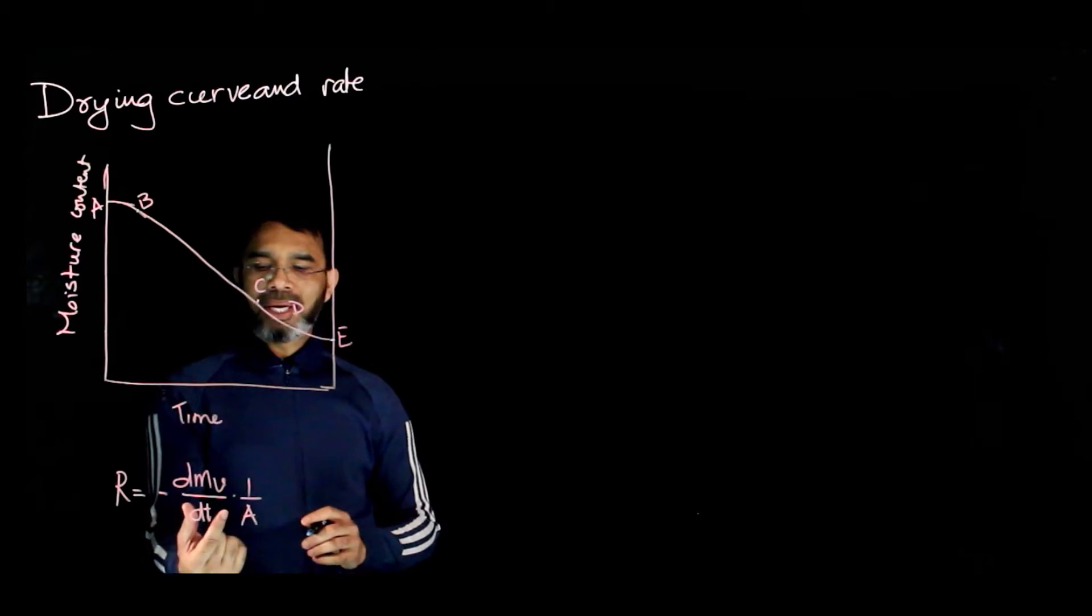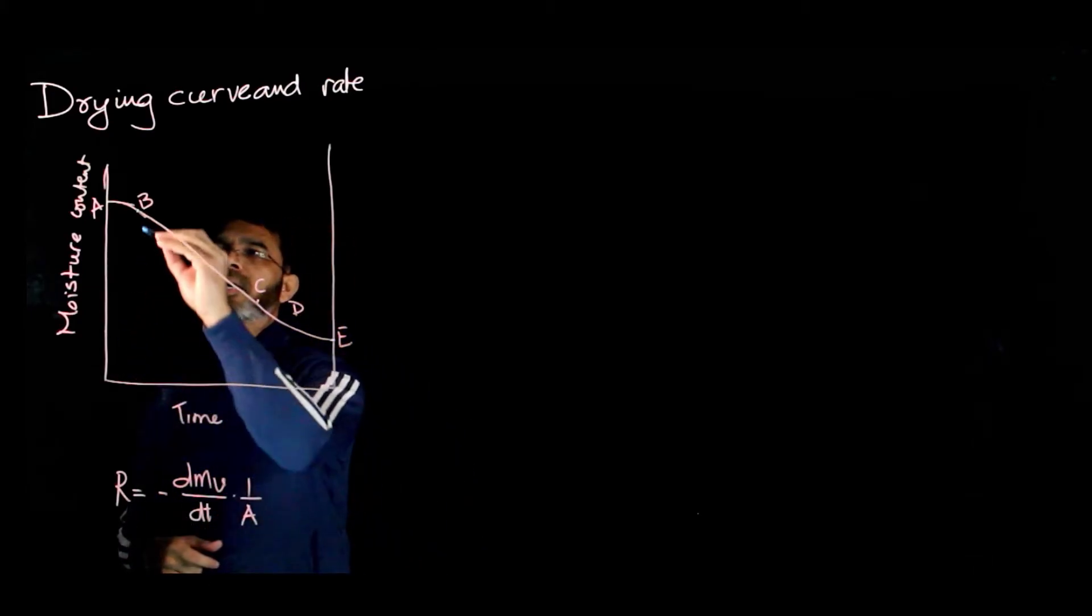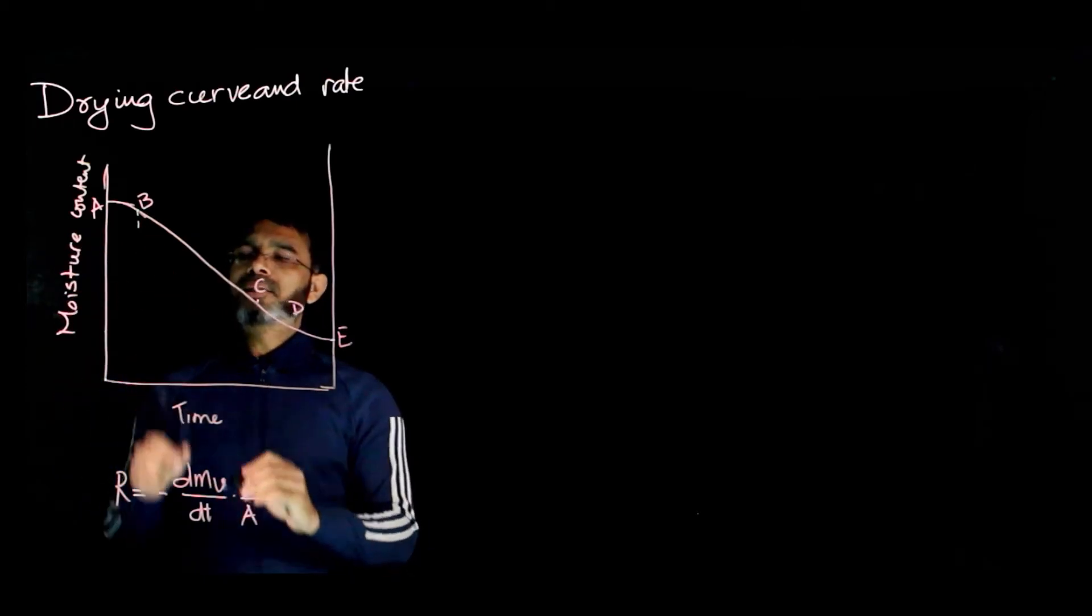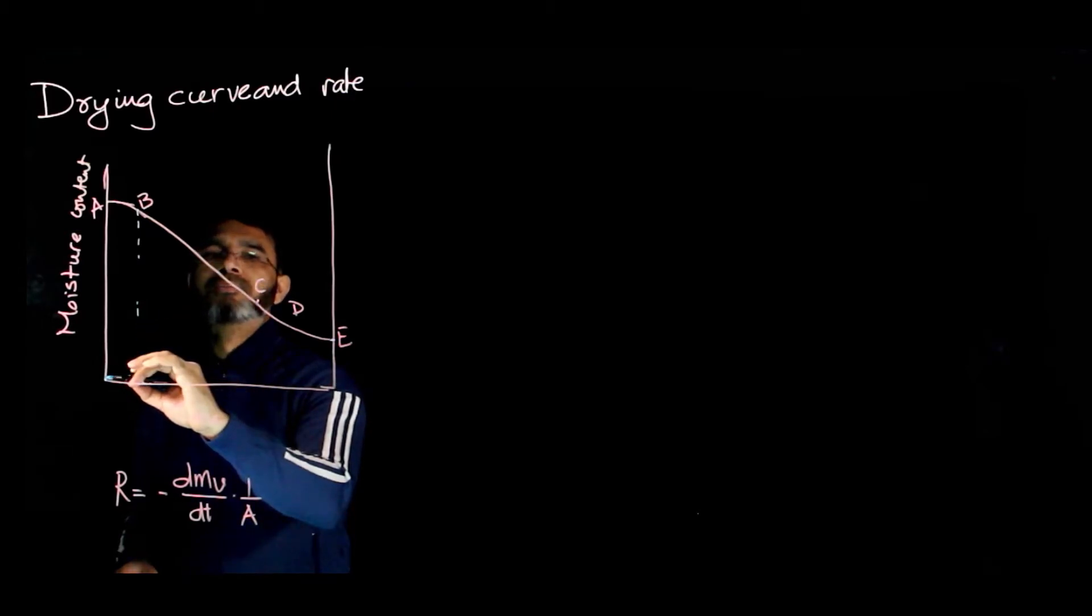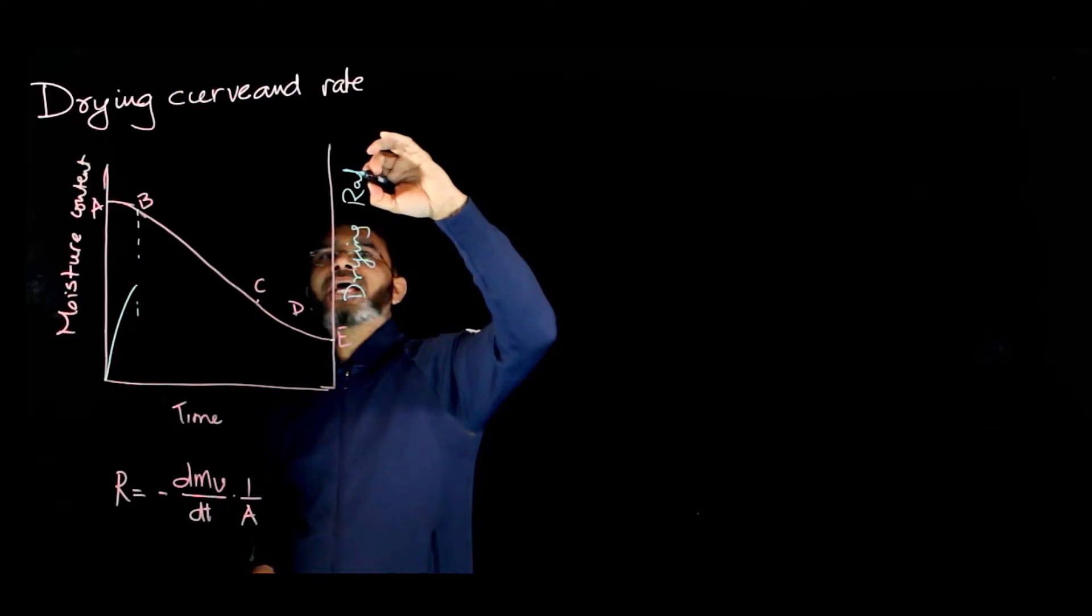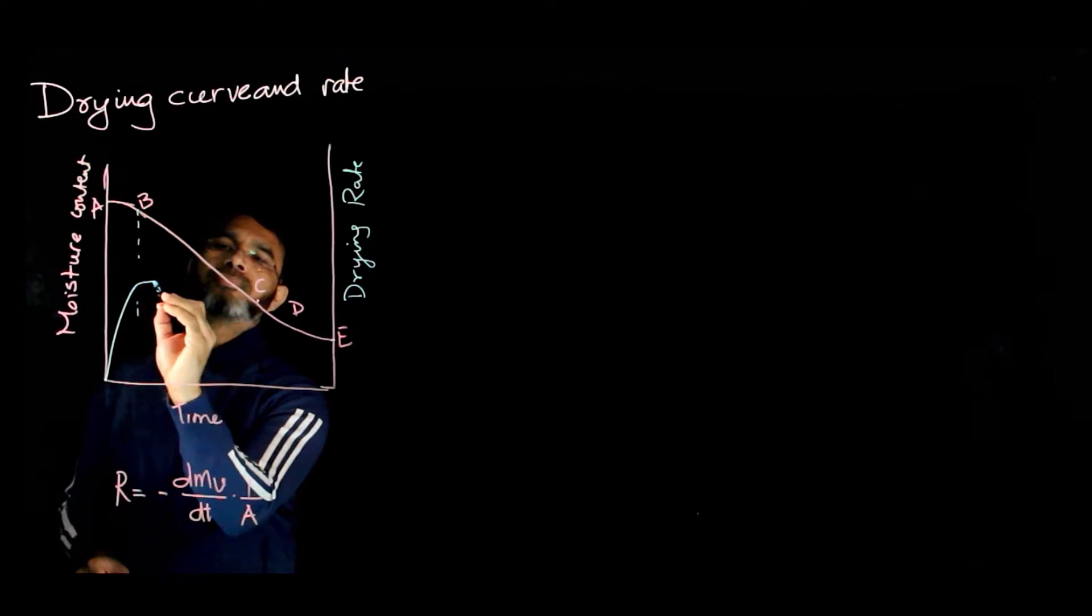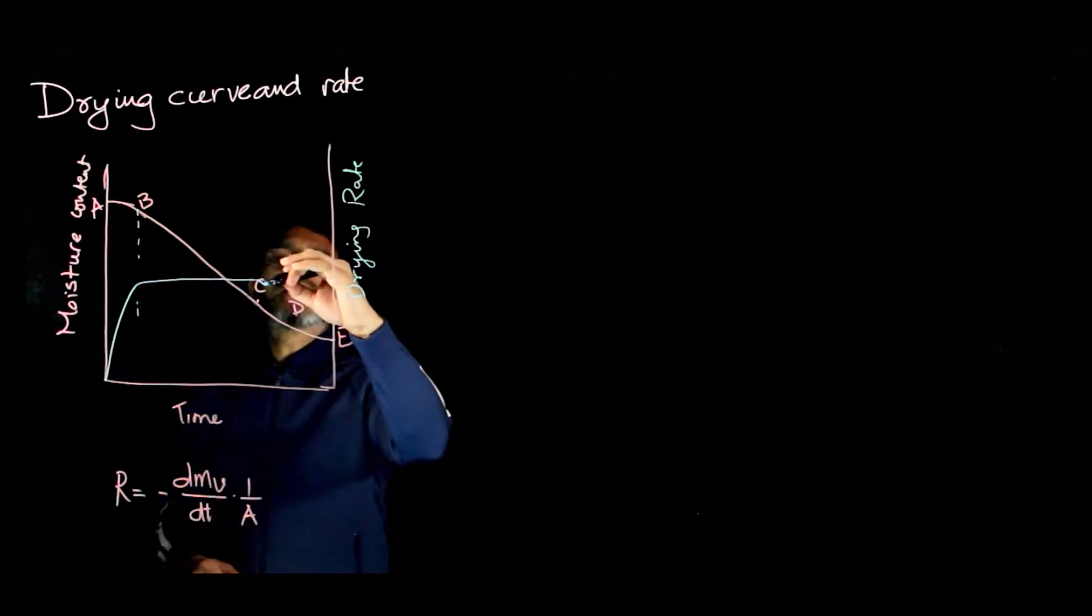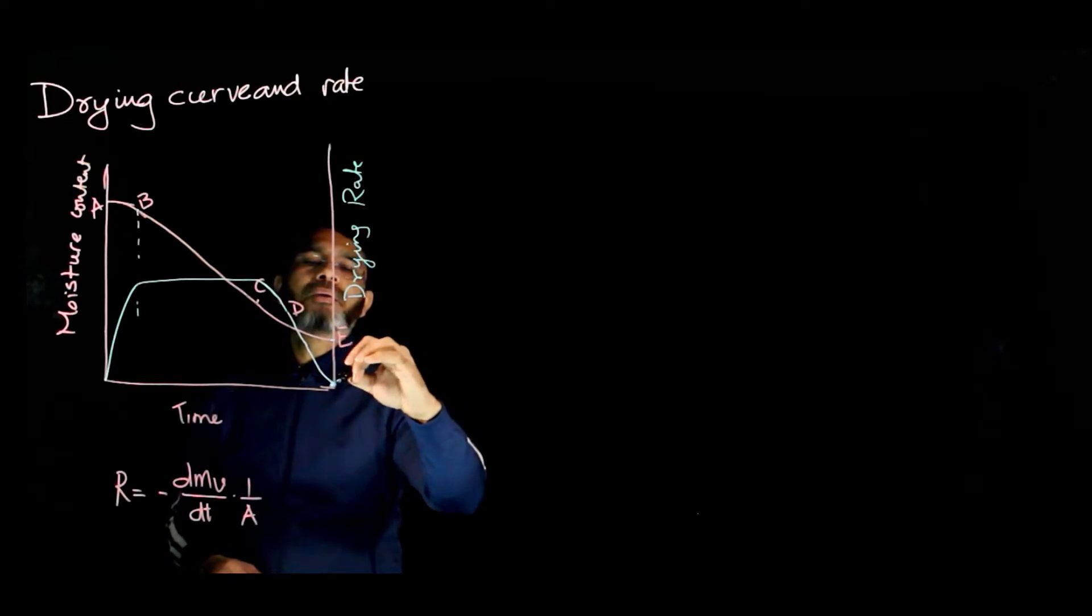As I said, the drying rate is simply the negative of the slope of this curve. If we draw it, initially it's zero, then it slowly increases to some value at point B. If I plot drying rate on a different axis, from B to C there is a constant rate, from C to D there is a decrease, and from D to E there is a further decrease back to zero.